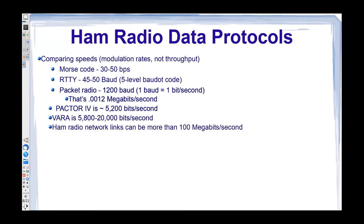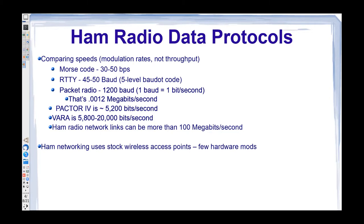But AREDN ham radio network links can be more than 100 megabits per second. The theoretical maximum on a 20 MHz wide channel is 144.2 megabits per second — though you'll only see that if you've got a stonking strong signal between two nodes that are completely line of sight. The ham radio networking with AREDN uses stock wireless access points; there's no need to do hardware hacking anymore, and that eases the entry level.